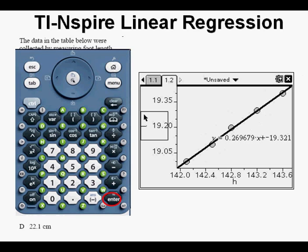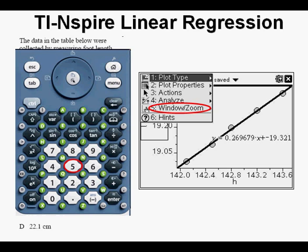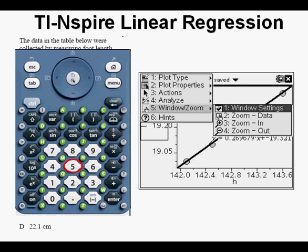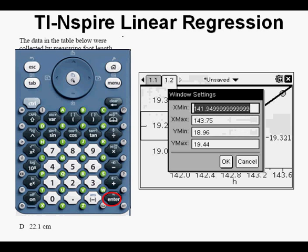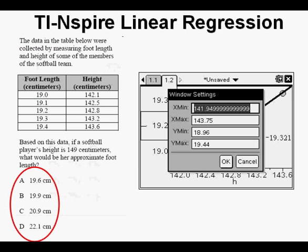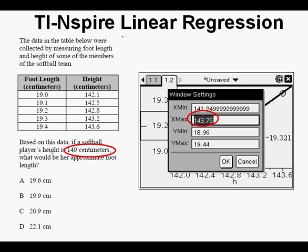Press the menu key. We see our window zoom option here at number 5. Press 5 for window zoom. We see window settings option 1 highlighted. Press Enter. We see the window settings dialog box. We have to change our settings to cover the possible answer choices. We have to include a height of at least 149 cm,